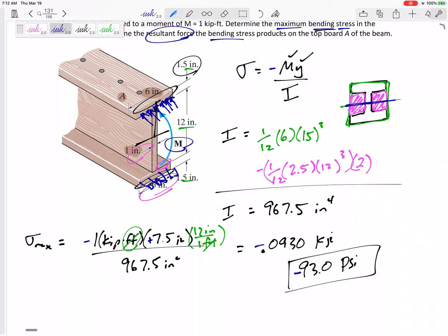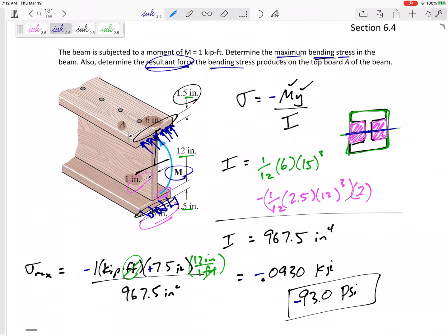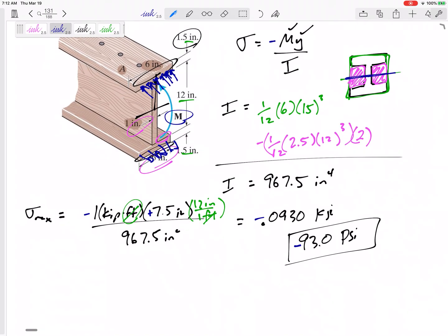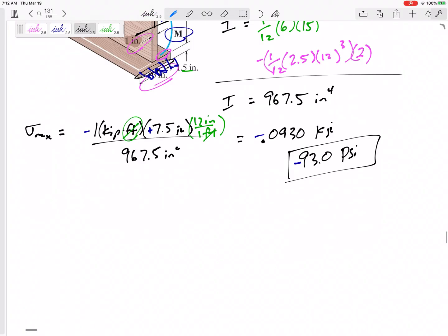Okay. But now let's look at this second question. Very interesting. Determine the resultant force the bending stress produces on the top board A. Alright. So we've got all this stress on the top board acting on this area of the top board. And so we want to say, okay, what's the resultant force of that? It's kind of like a distributed load on the top. And what is the resultant force? Let's look at this from the side.